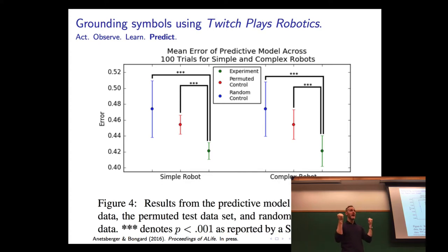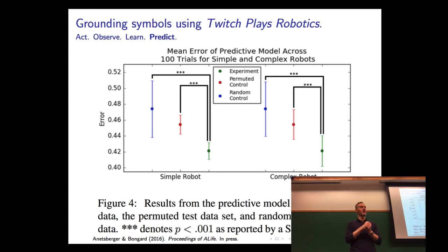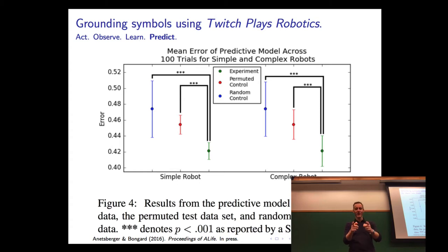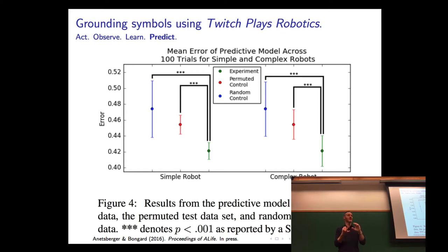You might remember from the beginning of the course when we talked about perverse instantiation — there was a humanoid robot given the fitness function to open the door and go through it. What did the robot do? It opened that wooden door and then literally went through the door, demolishing it. Perfect example of perverse instantiation. The robot did exactly what the investigators wanted — it opened the door and went through it — but afterward the investigators said, 'That was not what I meant.'